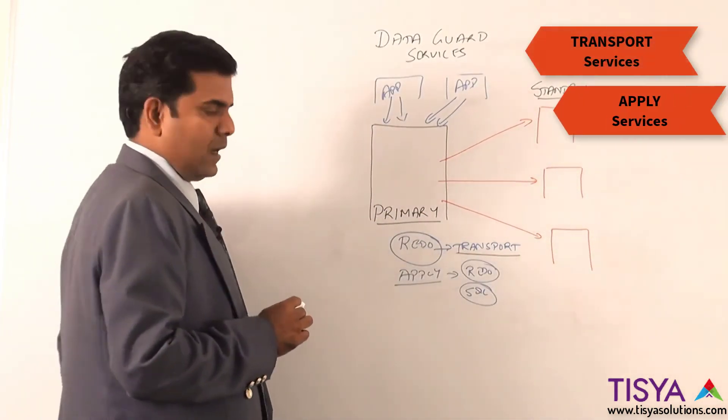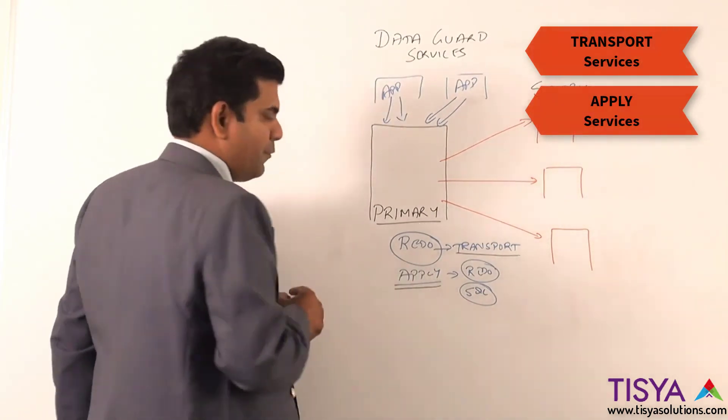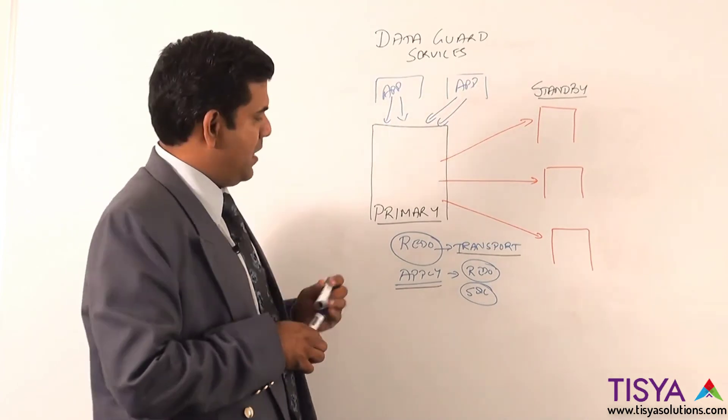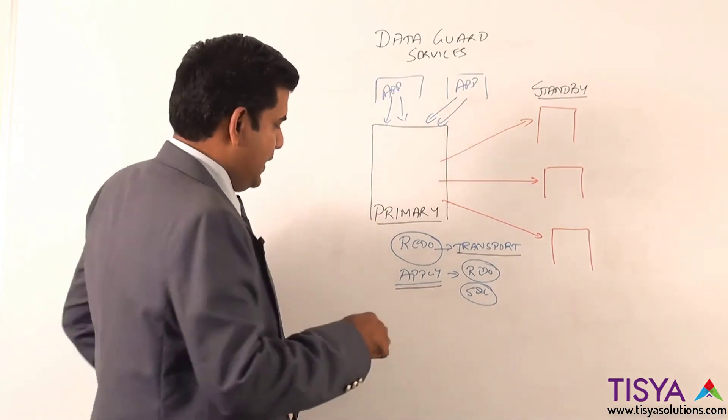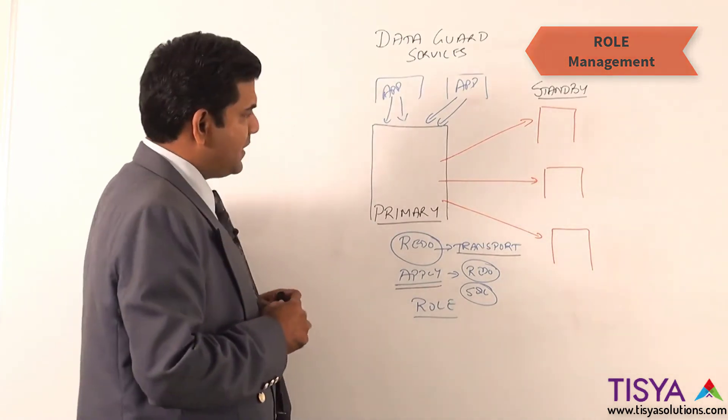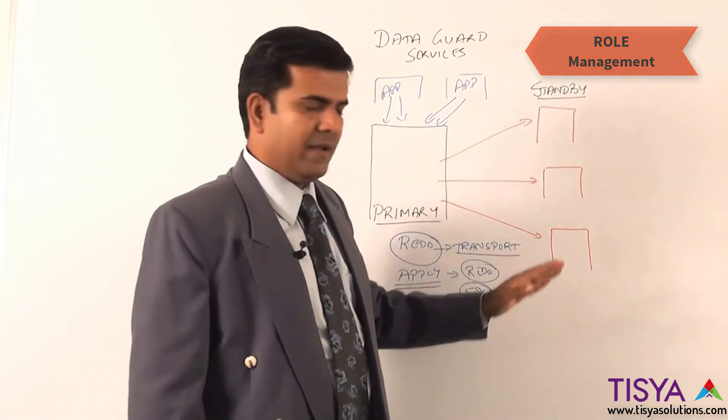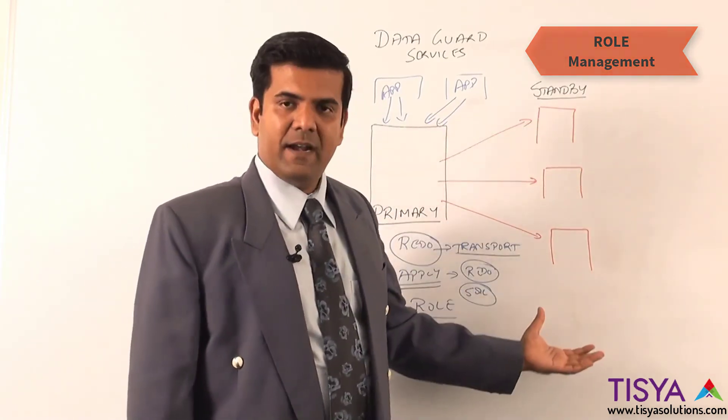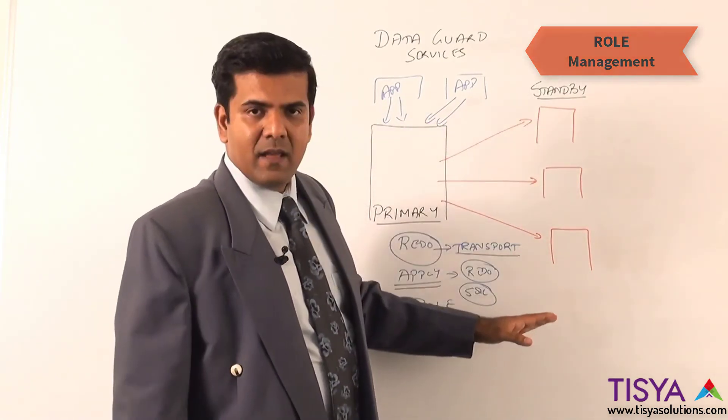Number one is that we need to ensure we ship the data. Number two is we need to ensure we apply the data. And the most important at the end of the day when we transport and apply is to ensure role management amongst these four databases that are depicted over here: which is playing a primary role, which are the standby databases, and amongst the standby are there any physical, logical or snapshot standby databases. This is taken care by role management services.